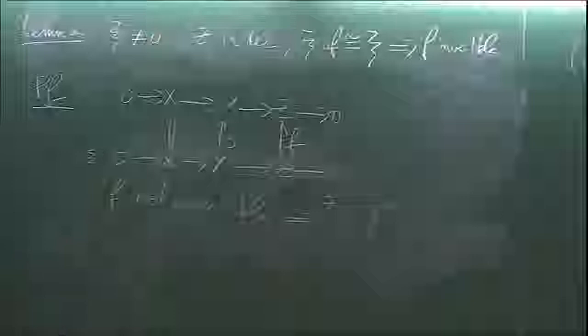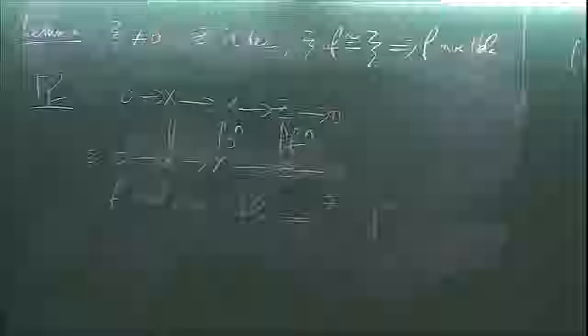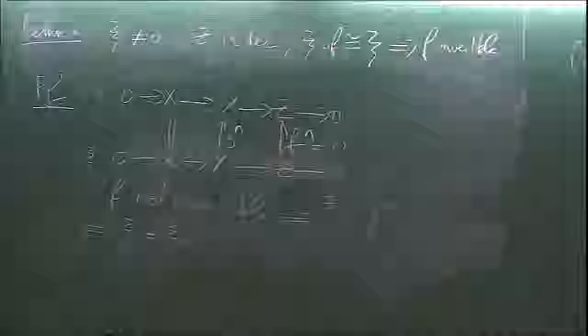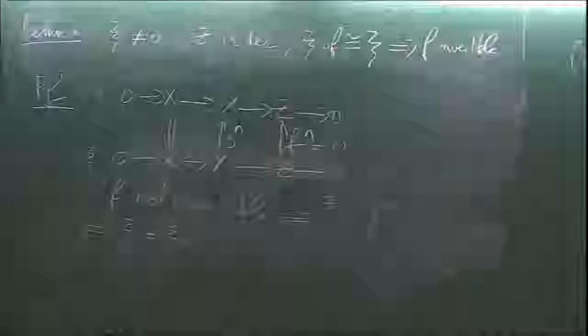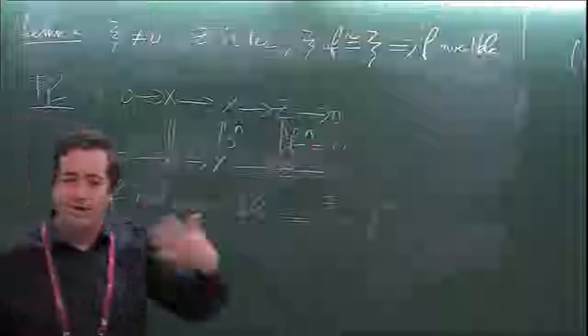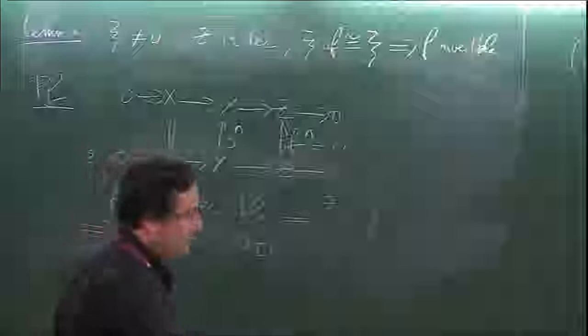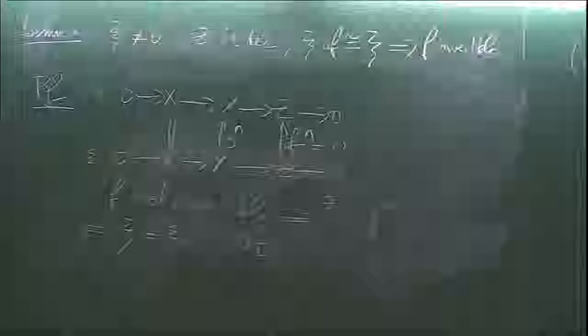So this equals zero. Therefore xi is actually equal to xi composed with zero. This is a contradiction with xi being non-zero. So f must be invertible. And this permits me to prove the proposition.